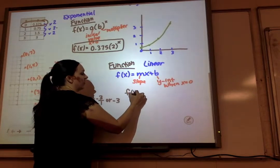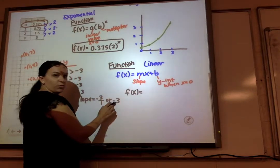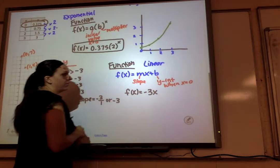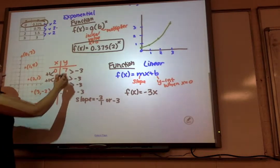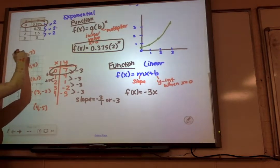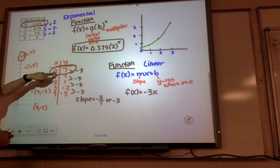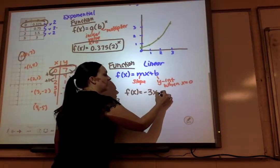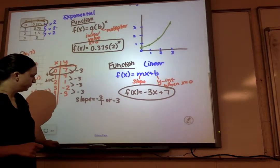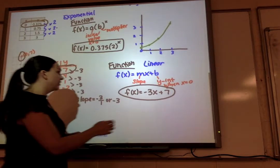So my function is f of x equals my slope, we just found it, it's the difference in the numbers, negative 3x. And here's our y-intercept. We see it on the graph right here too when we cross the y-axis. It is positive 7. And there's our function. So that's a linear function.